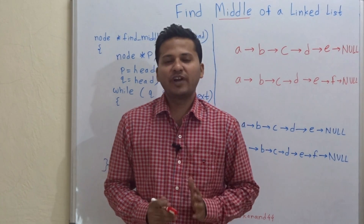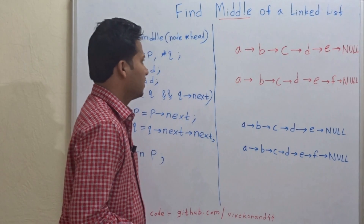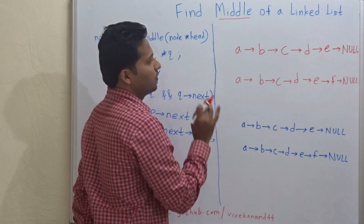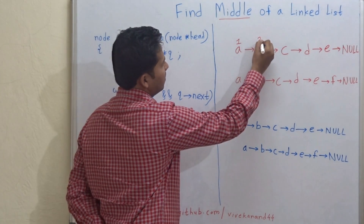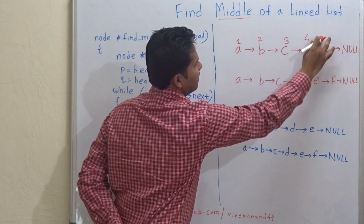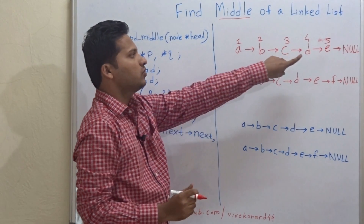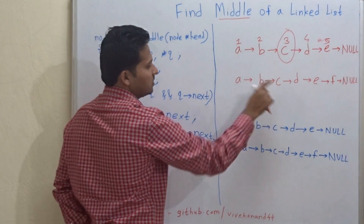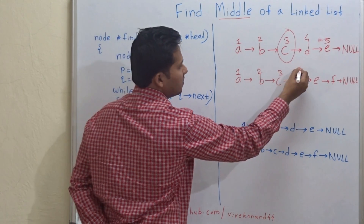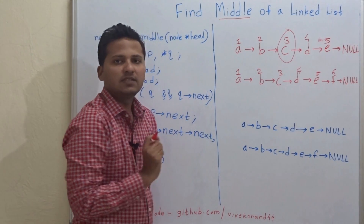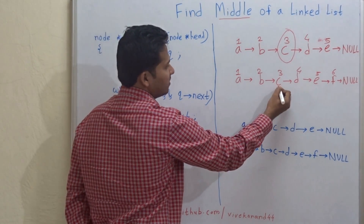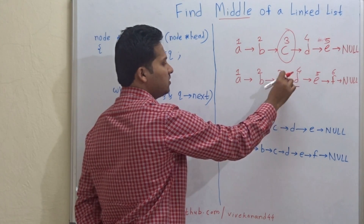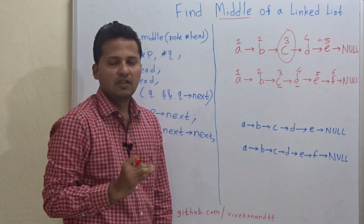Today we are going to see how to find the middle of a linked list. In the first example, there are five nodes numbered first through fifth — so the third node is the middle. In the second linked list there are six nodes, and since it is an even-length linked list, either the third or the fourth node can be considered the middle.